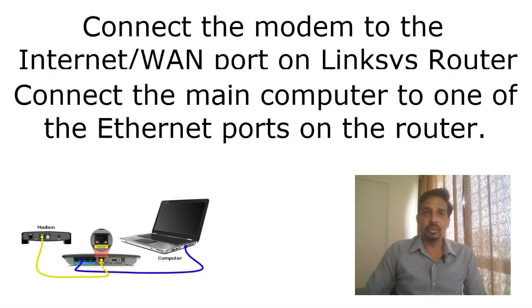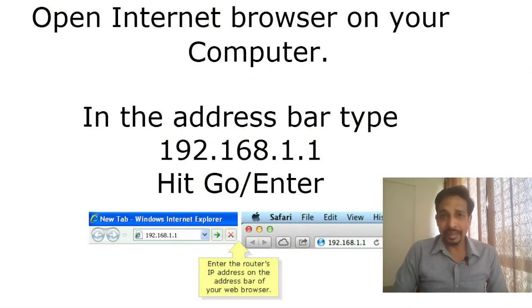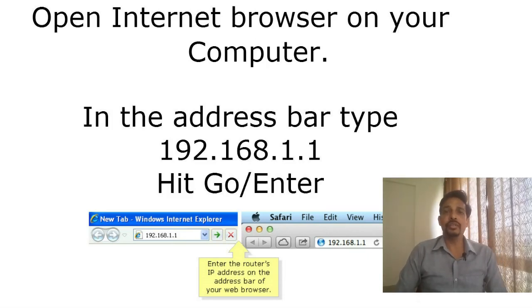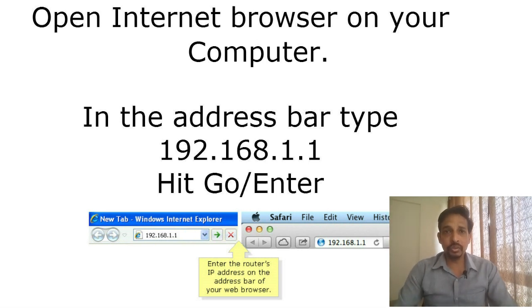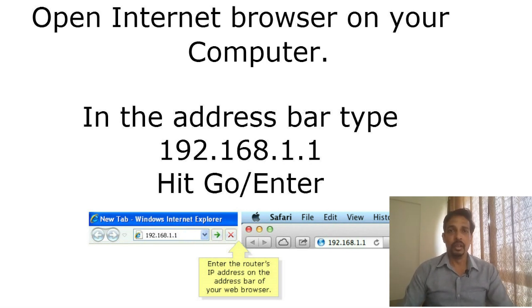First, connect your computer to the router and the modem to the router. Then open an internet browser — Internet Explorer, Safari, Firefox, or any browser on your computer. In the address bar, type 192.168.1.1, which is the default IP address of the Linksys router. It will ask for a username and password. The default password is 'admin' (A-D-M-I-N); leave the username blank.